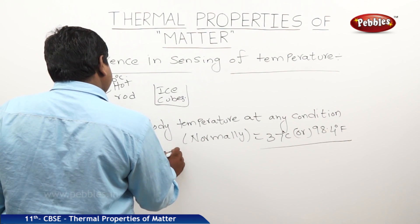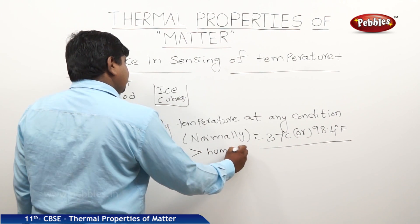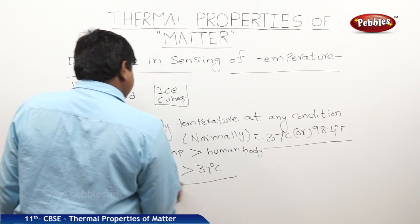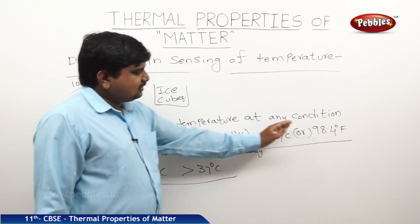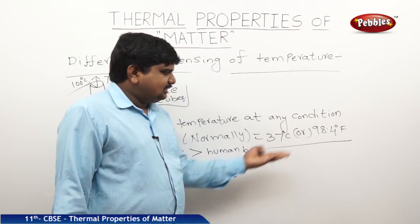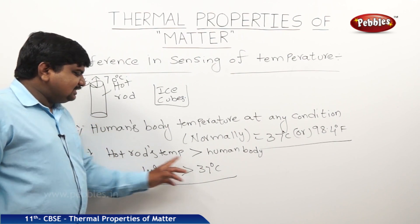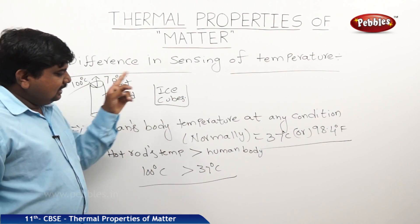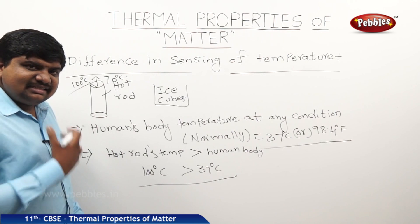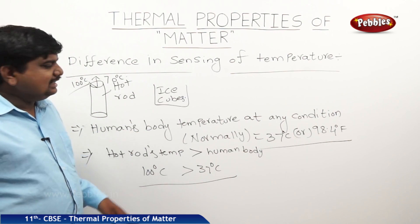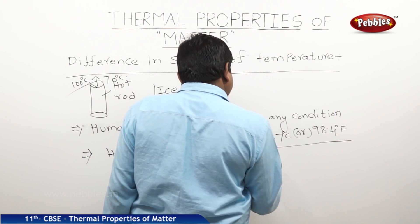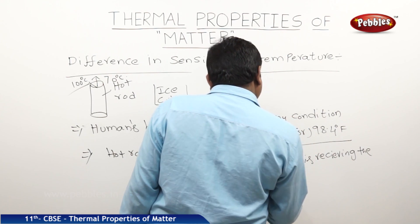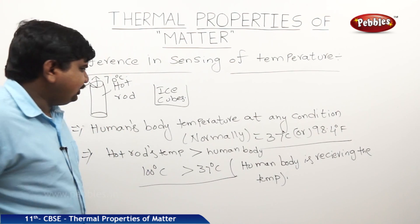The hot rod's temperature is greater than the human body's temperature — it is around 100 degrees Celsius, while the human body is normally 37 degrees Celsius. Values increased beyond normal indicate fever. Since 100 degrees Celsius is greater than 37 degrees Celsius, heat energy from the hot body passes to the human body. The human body is receiving heat energy, and that's why we feel a hot sensation.